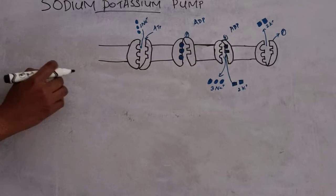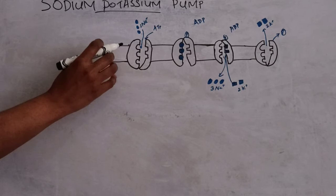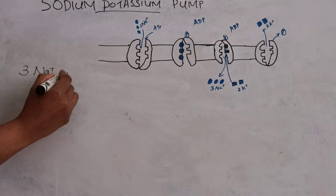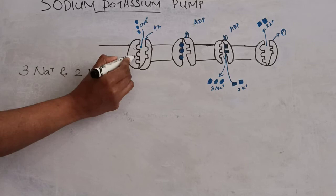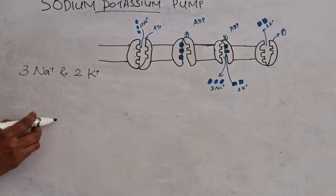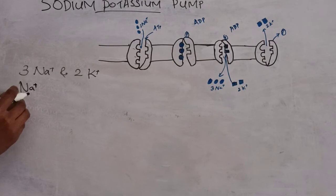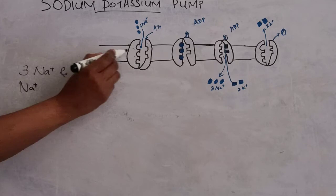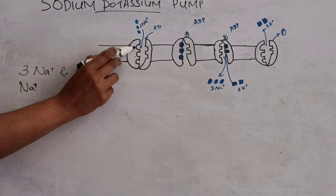The sodium-potassium pump has binding sites for 3 sodium and 2 potassium ions. This pump has a higher affinity for sodium ions than potassium ions. At first, 3 sodium ions bind to the cytoplasmic side of the protein.